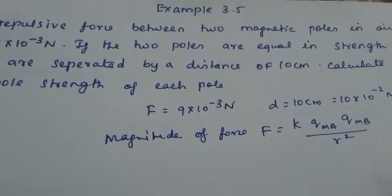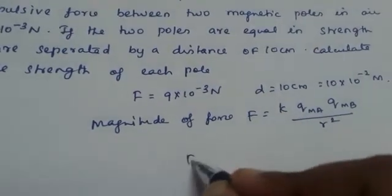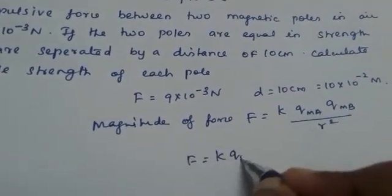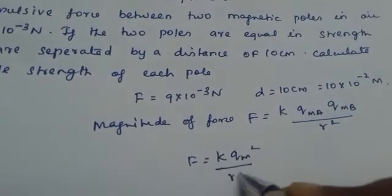Here, both are having equal pole strength. So this can be written as F = K × QM² / R².